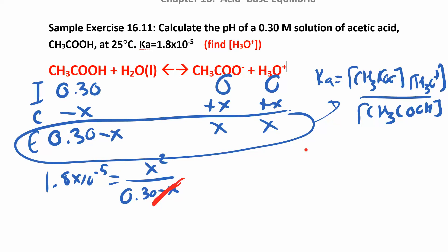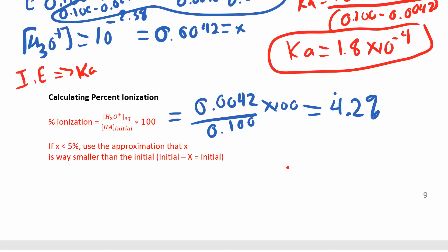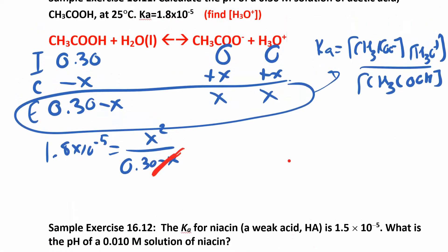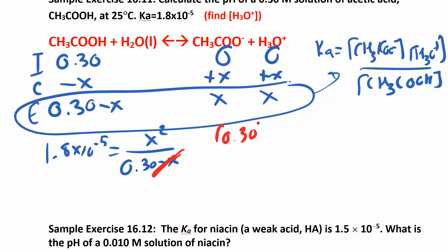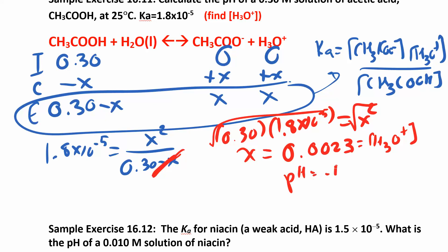We're making the approximation but we'll always check it. So we have 0.30 times 1.8×10⁻⁵ equals x squared. Taking the square root of both sides, x equals 0.0023. That's our hydronium concentration. Then pH equals negative log of 0.0023, which gives us a pH of approximately 2.63.